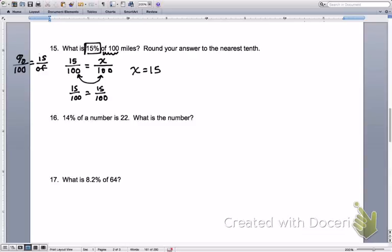What is 15% of 100 miles? We're looking for miles, so my answer is 15 miles. I don't know why it says round to the nearest tenth because it's a whole number, so just disregard that. I know that throws you off a bit, makes you think you're doing it wrong, but that was just silly.